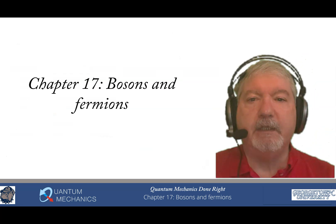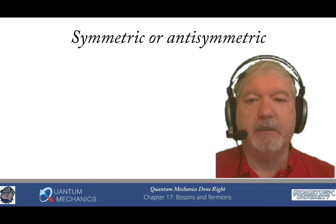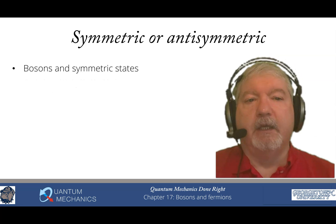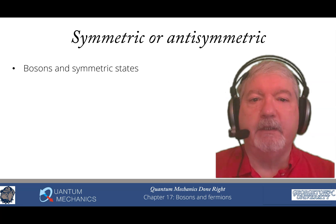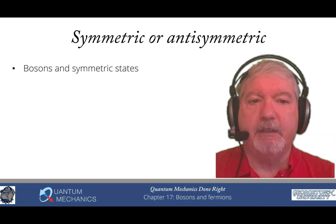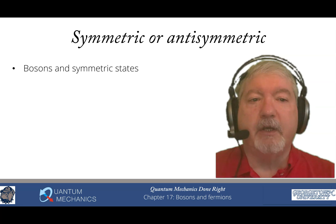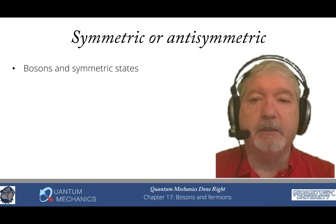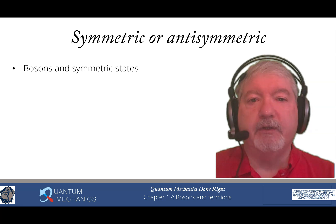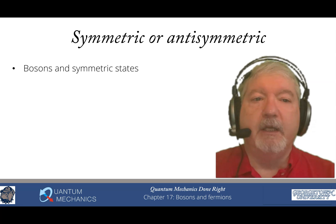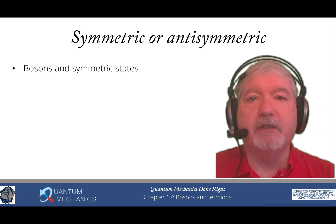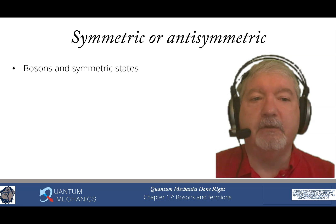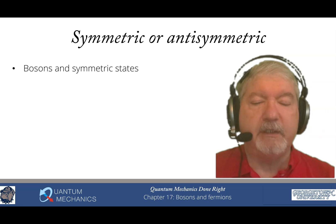Chapter 17: Bosons and Fermions. The key issue with quantum mechanics when we get into many-particle states is that the particles are indistinguishable from one another. When we interchange the two particles they have to either return the same quantum state or the negative of the quantum state. For bosons, it returns the state itself, and those are called symmetric states.